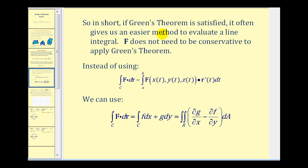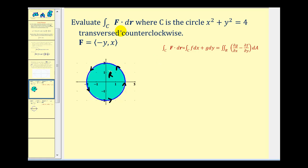In short, if Green's Theorem is satisfied it often gives us an easier method to evaluate a line integral. The vector field F does not need to be conservative to apply Green's Theorem. So instead of parameterizing everything in terms of t, if the region is piecewise smooth, connected, and oriented counterclockwise, we can apply Green's Theorem. Let's take a look at our first example.